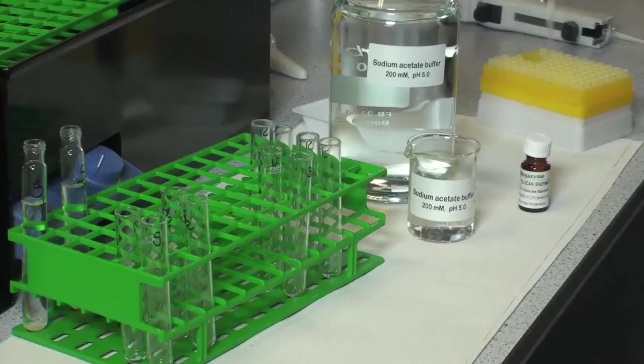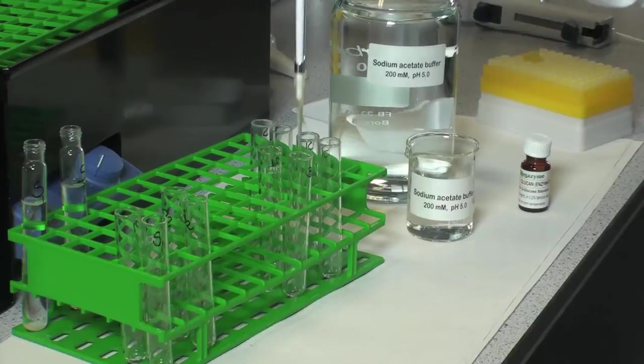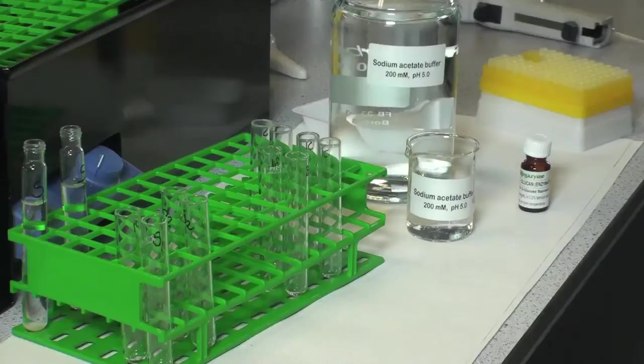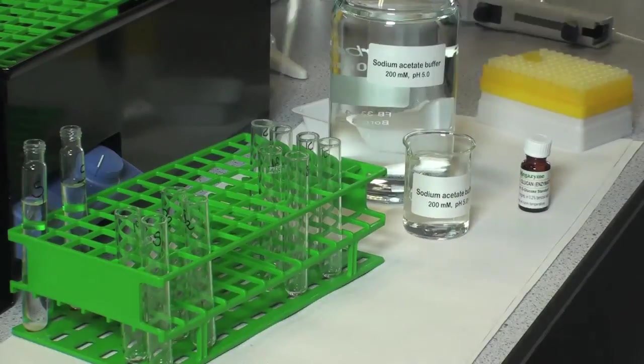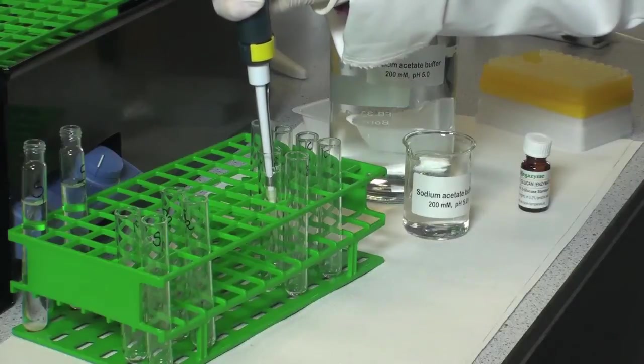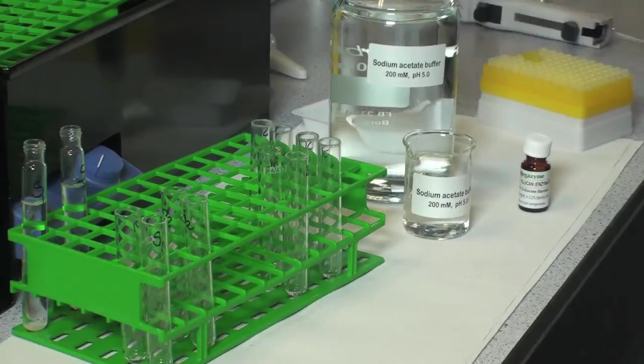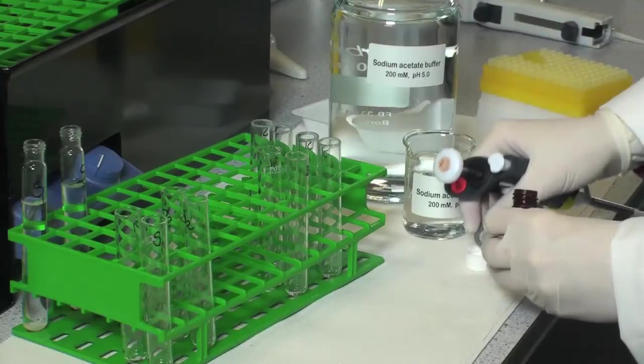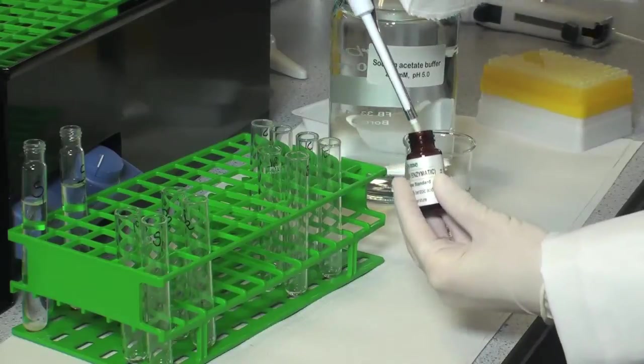Prepare the reagent blank by adding 0.1 mL of sodium acetate buffer, 200 millimolar pH 5, to the bottom of test tubes in duplicate. Prepare the glucose standard by adding 0.1 mL of glucose standard solution, 1.5 milligrams per mL, to the bottom of 4 test tubes.